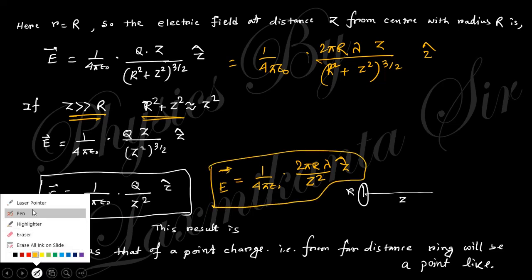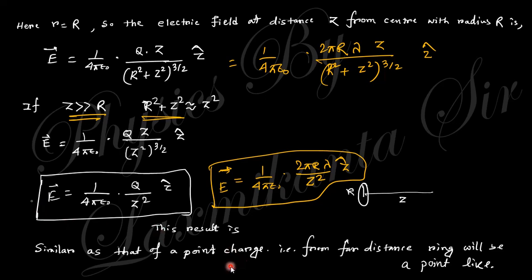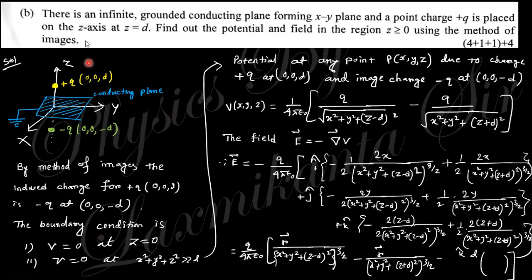This is similar to a point charge result — at far distance, the ring behaves like a point charge. Next question: there is an infinite grounded conducting plane forming the x-y plane and a point charge +Q is placed on the z-axis at z equals d. Find the potential and field in the region z greater than 0.